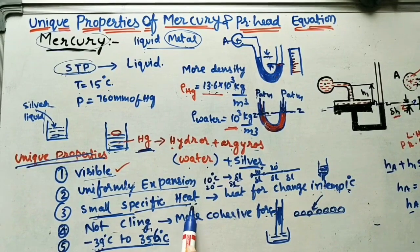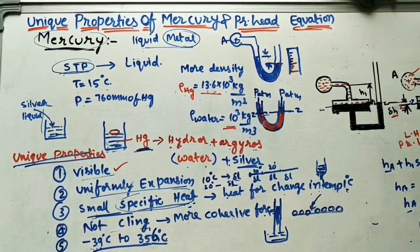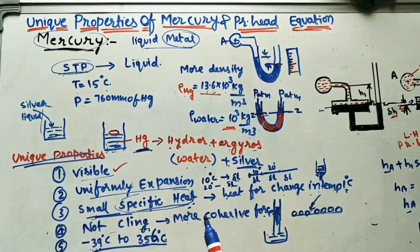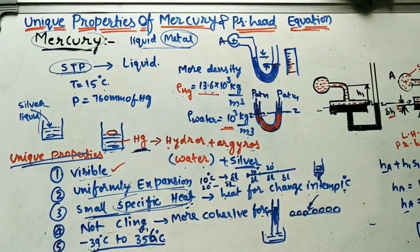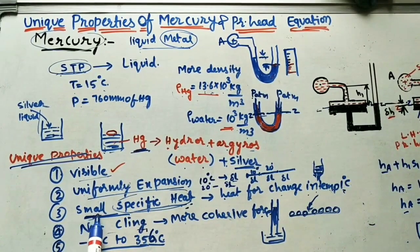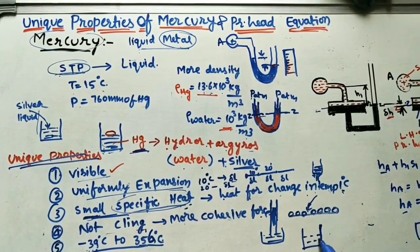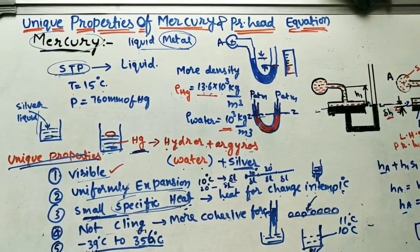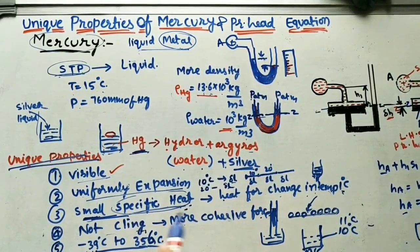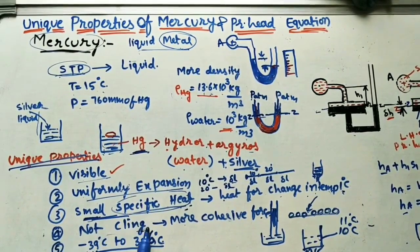Mercury also has a small specific heat — meaning the heat required to increase its temperature by one degree is very small. For example, to raise mercury from 10°C to 11°C, very little heat is required. In comparison, water requires much more heat for the same one-degree temperature increase.